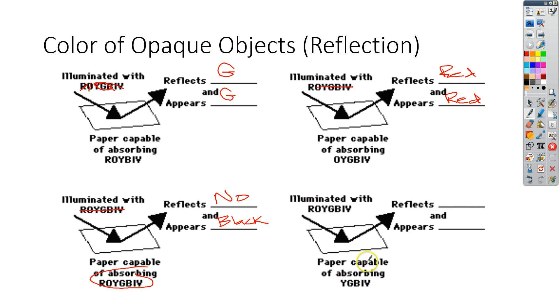If the paper is capable of absorbing just yellow, green, blue, indigo, and violet, it will reflect red and orange, and so the paper will appear reddish orange.